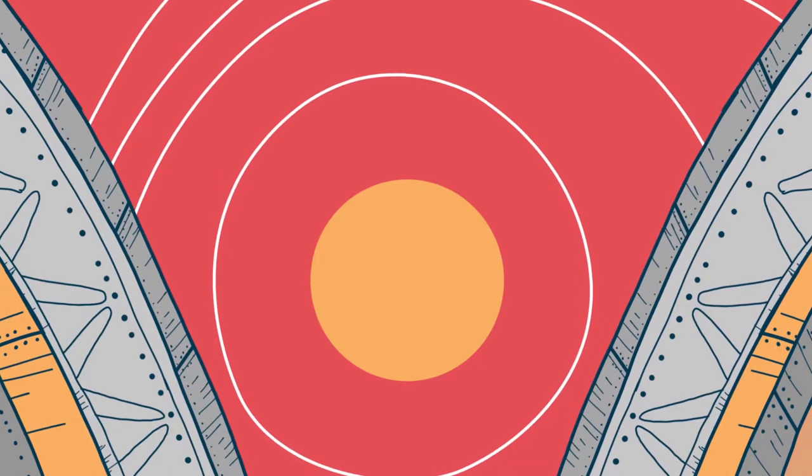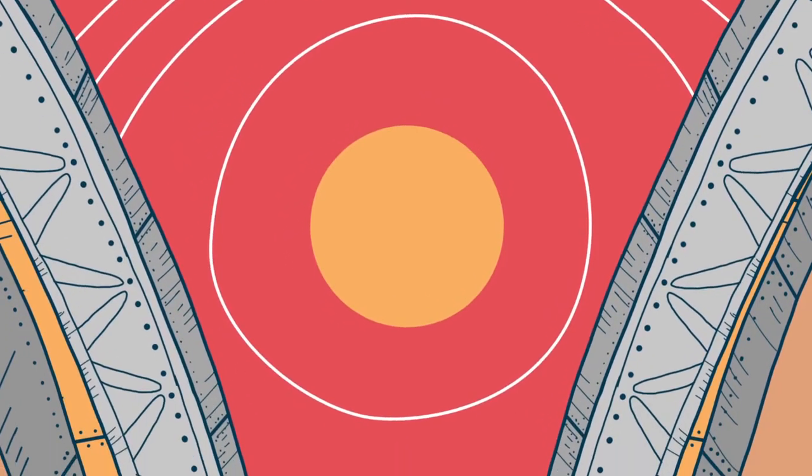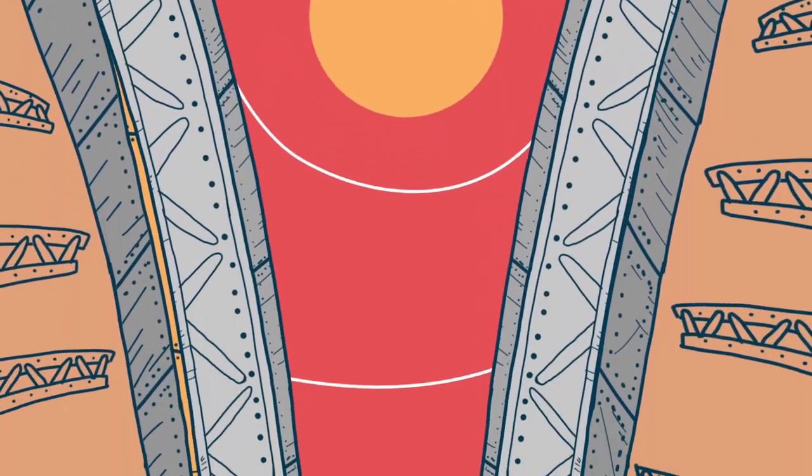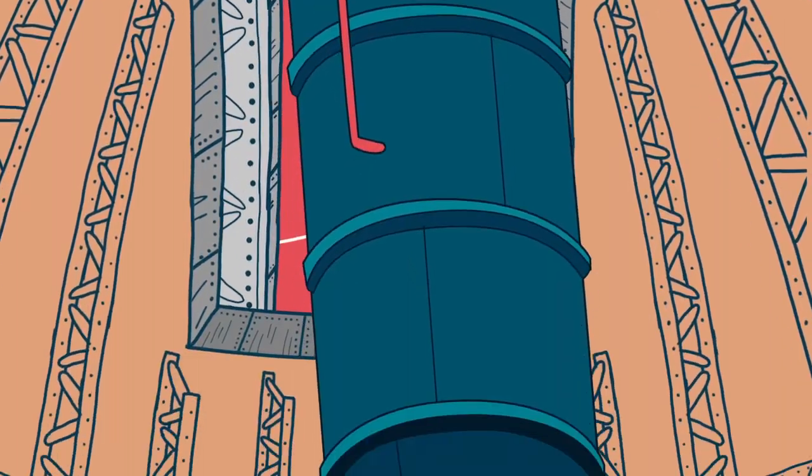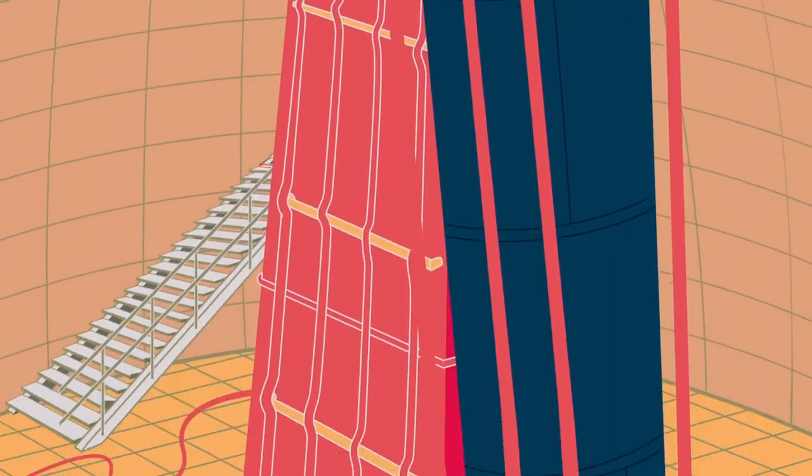Ma tutto questo era già noto ai tempi di Hale. Il suo più grande successo fu progettare spettrografi sempre più potenti, in grado di osservare le righe prodotte dalla superficie del Sole.